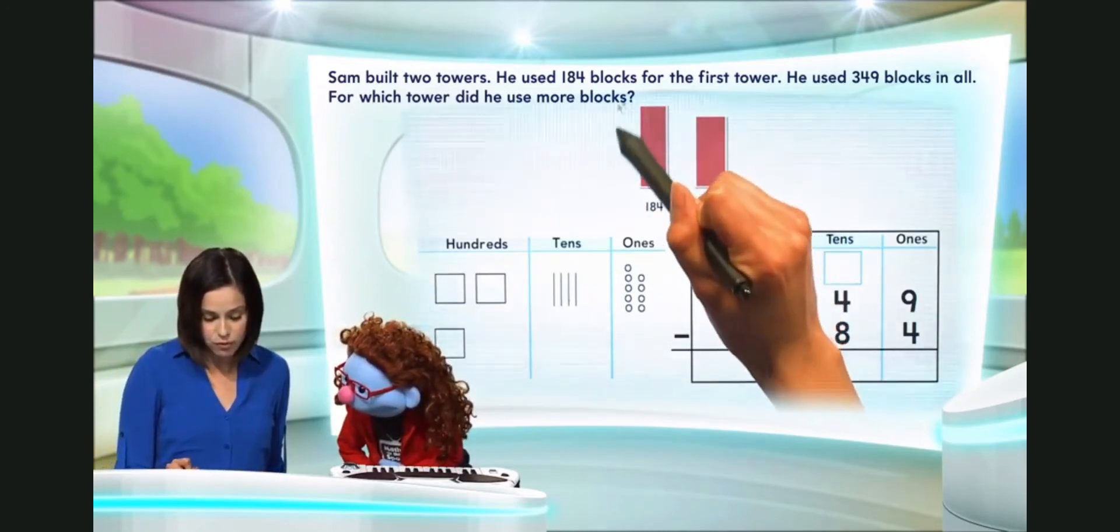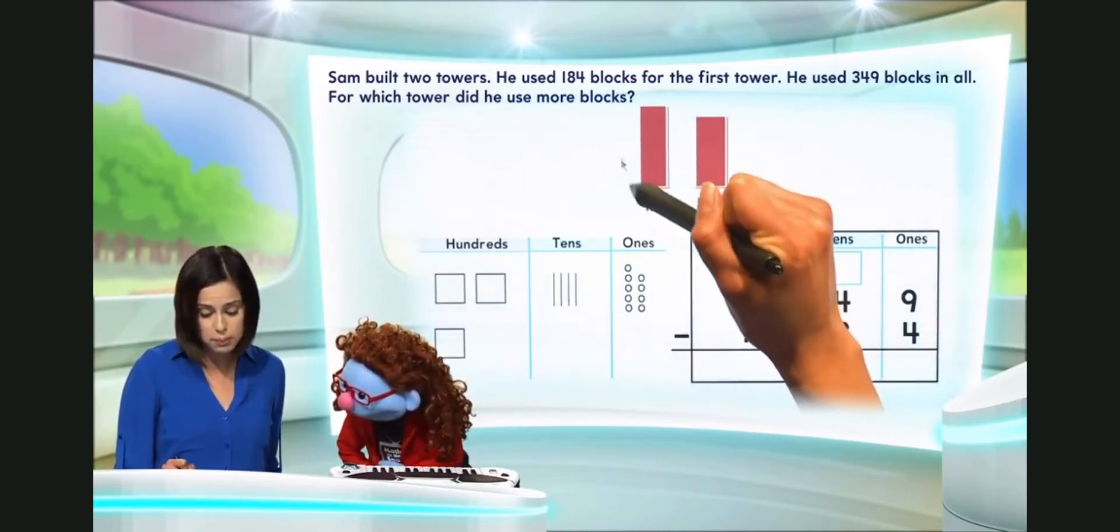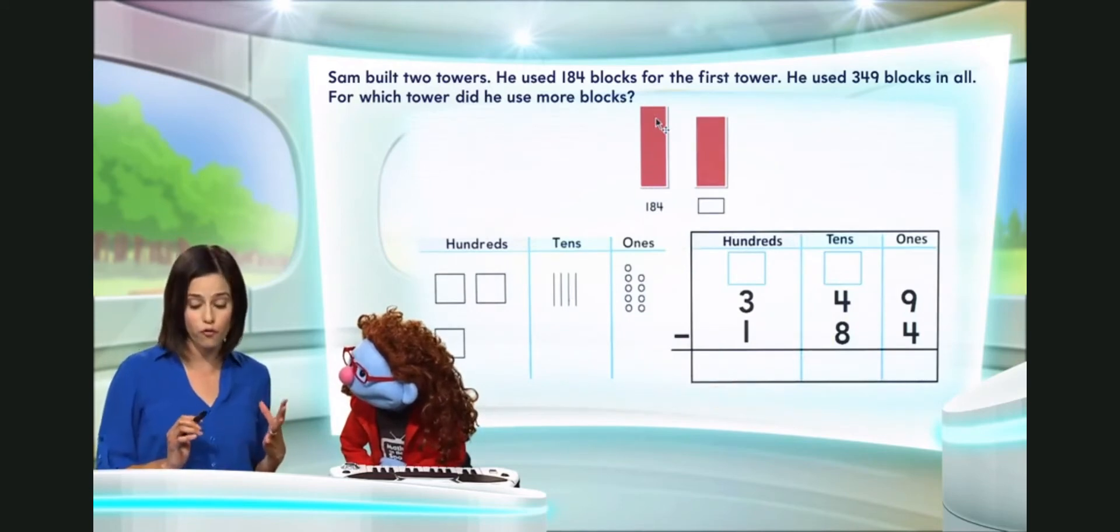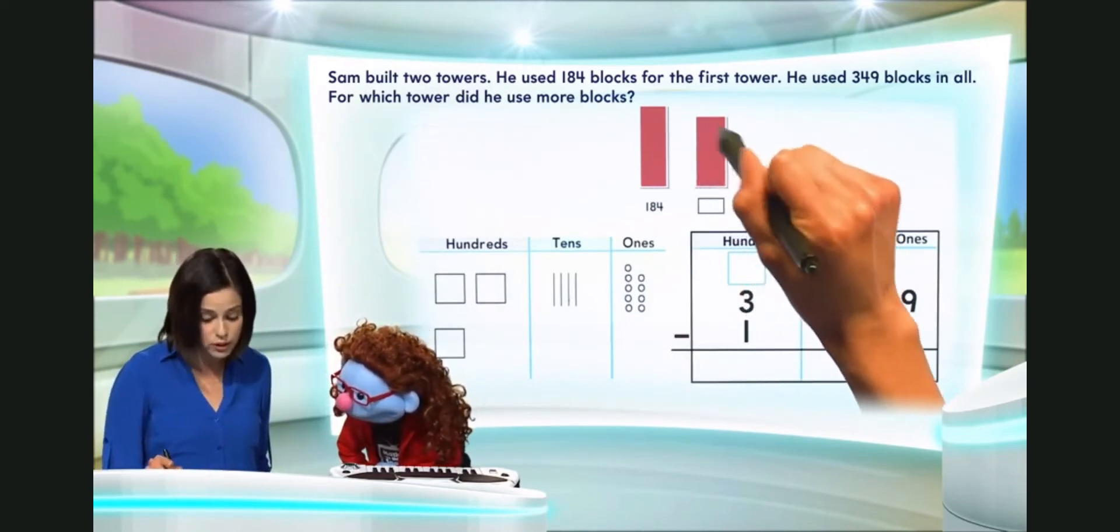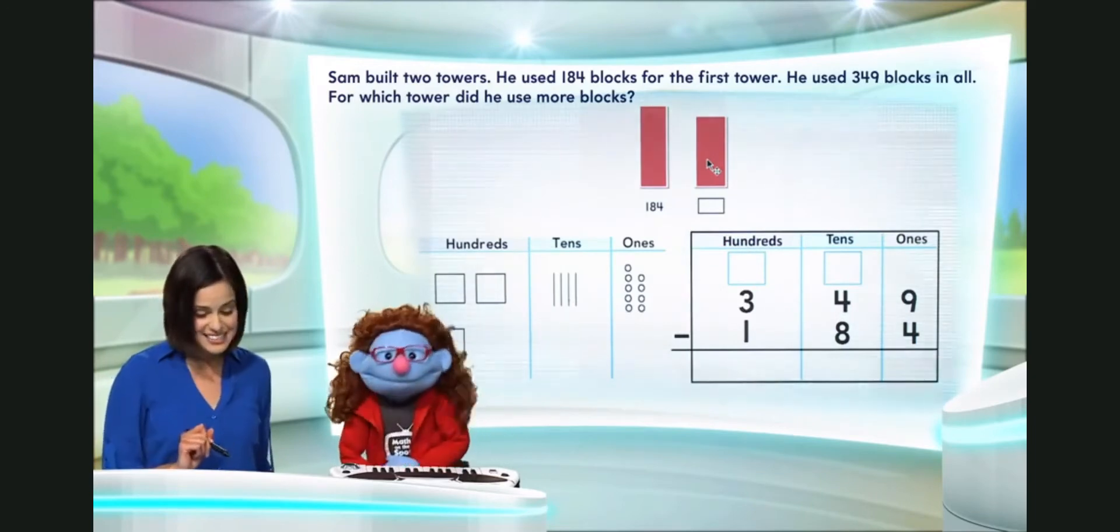Now, here we have 184 blocks that Sam used for the first tower. Okay. Here's our second tower.